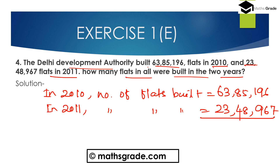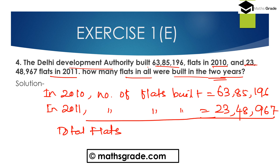We need to find the total number of flats built in these 2 years. We have to add these two numbers: 63,85,196 plus 23,48,967.